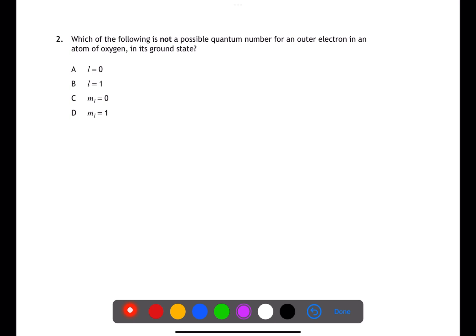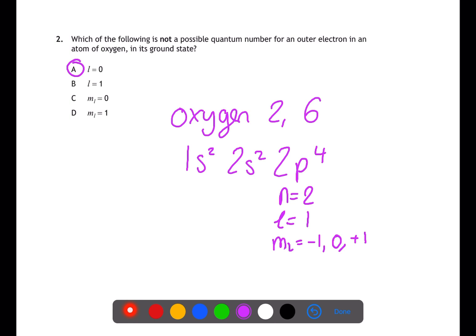Question 2 is looking at quantum numbers for oxygen. First we'll look at the electron configuration for oxygen which is 2, 6. If we write this out as full electron configuration we have 1s2, 2s2, 2p4. An outer electron is in the 2p4. This has n equals 2, l equals 1 because it's a p shell and ml equals minus 1, 0, and plus 1. This means that the electron cannot be in l equals 0.